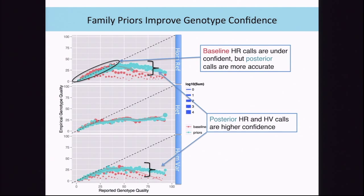Plotting reported genotype qualities against empirical values shows another big improvement: better calibrated genotype qualities in the 0–30 range, and many more high-GQ genotype calls after applying family posteriors. There's an asymptote in the graph because we're limited by the number of sites we have—to guarantee a site is valid to an error rate of 1 in 10,000, you need 10,000 sites, and we just don't have that for every GQ level. The takeaway is that there's much better calibration at low GQs, and we see many more high-GQ genotype calls.